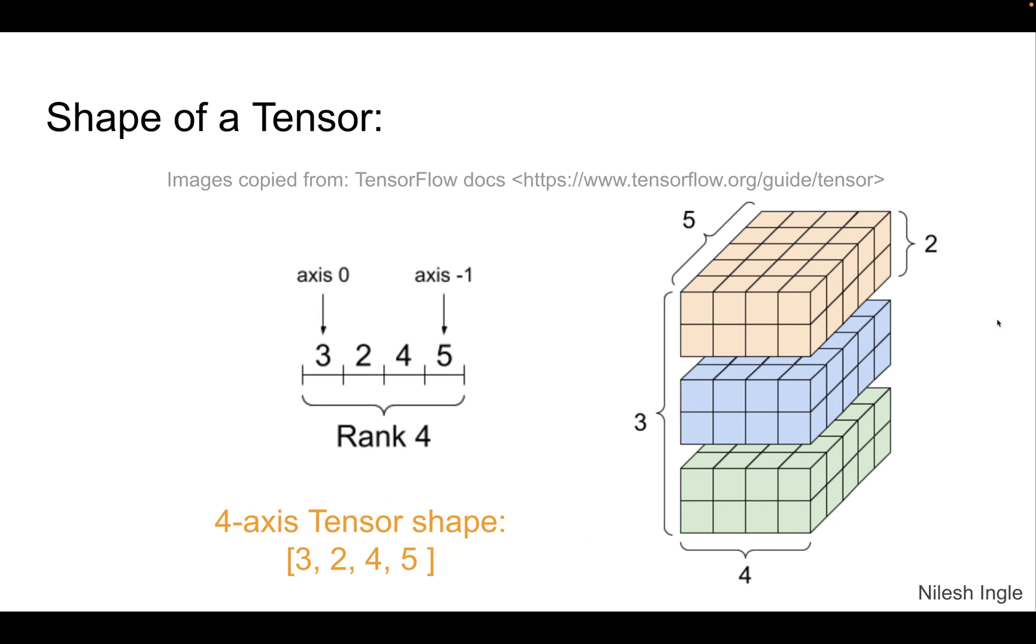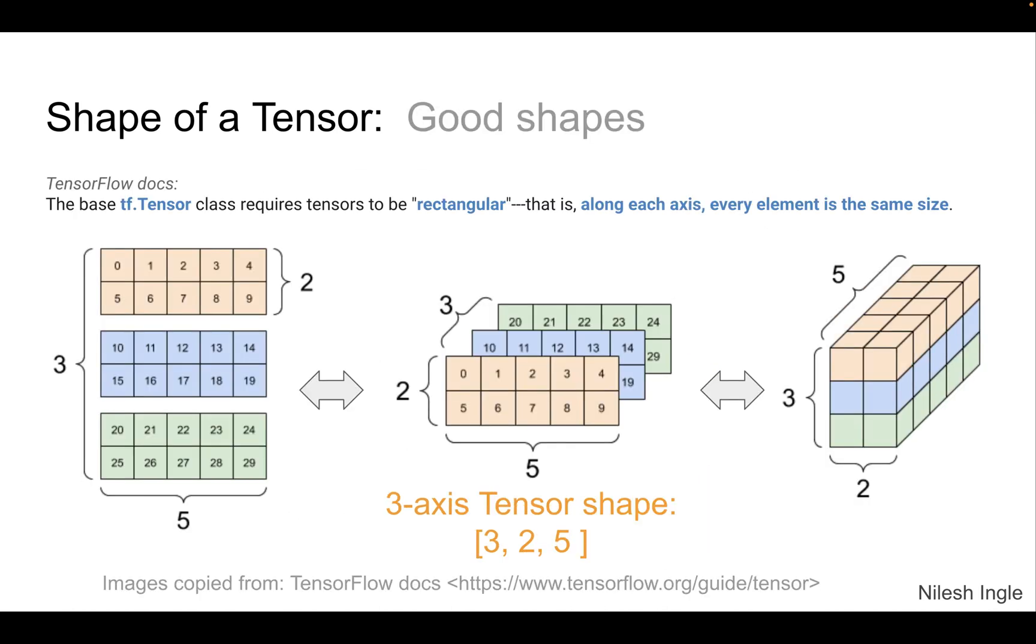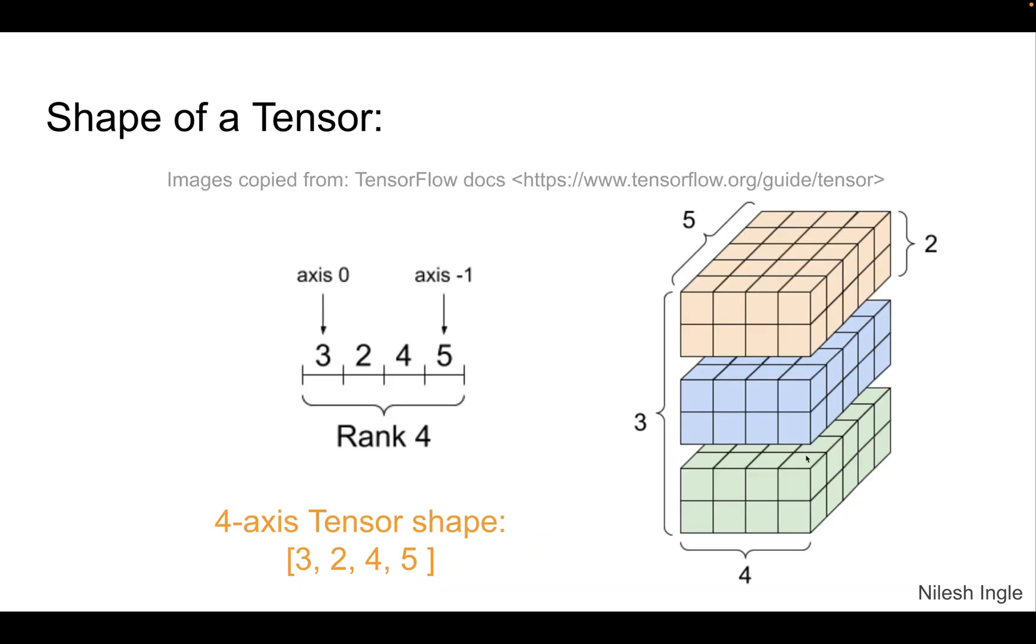Now, here we have those tensors that we saw on the previous slide, which is the three to five tensor that we stack three of those on top of each other. Now we have another tensor, which has four axis. The first axis is represented here by three, which is we have three individual tensors stacked on top of each other. And then we have each tensor, which has two rows and four columns, which is here.